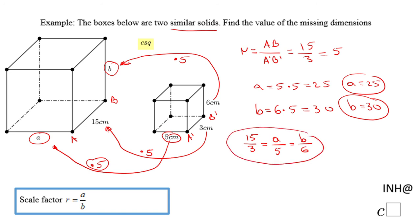Of course, you can think the problem backwards, going from large to small, and then the scale factor will be one-fifth, and you should get the same values. If you enjoyed this video, don't forget to click the like button and come back on C squared for more help. Thank you.